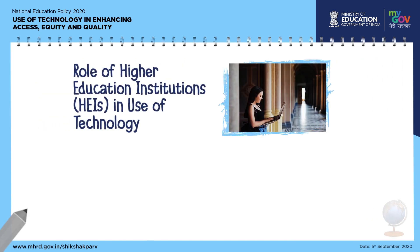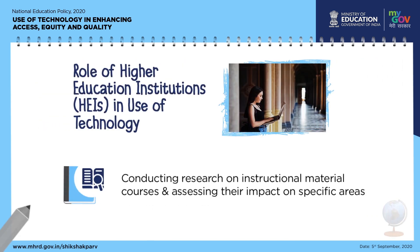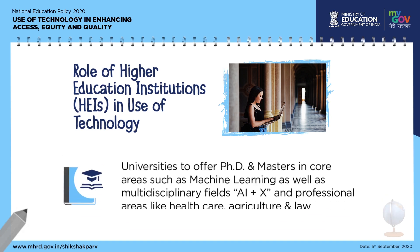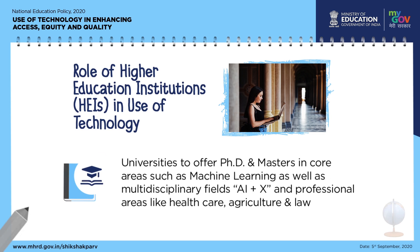The role of higher education institutions in the use of technology includes conducting research on instructional materials and courses and assessing their impact on specific areas, conducting targeted training for job readiness, and addressing upskilling, de-skilling, and re-skilling in view of disruptive technologies. Universities should offer PhD and Masters programs in core areas such as machine learning as well as multidisciplinary fields like AI+X.